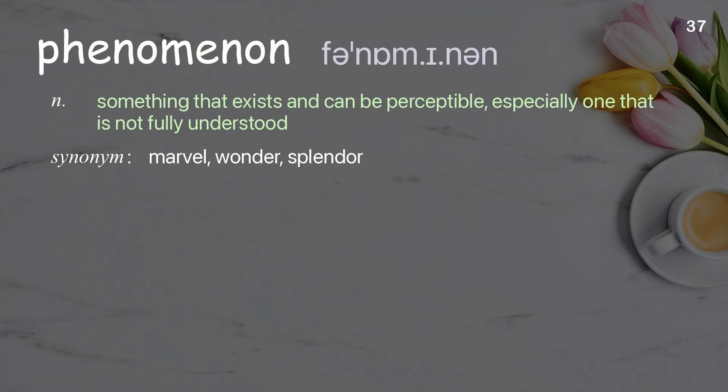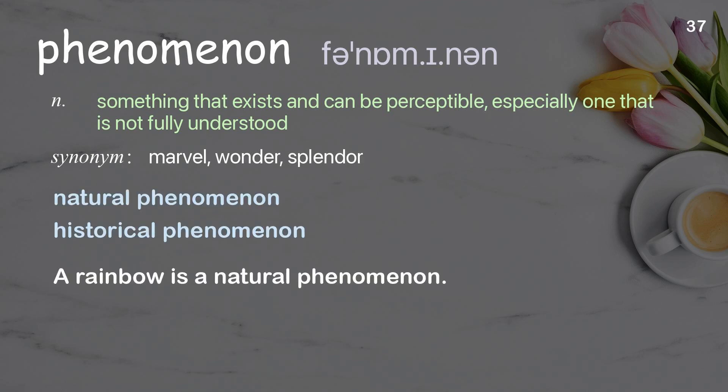Phenomenon: something that exists and can be perceived, especially one that is not fully understood. Examples: natural phenomenon, historical phenomenon. A rainbow is a natural phenomenon.